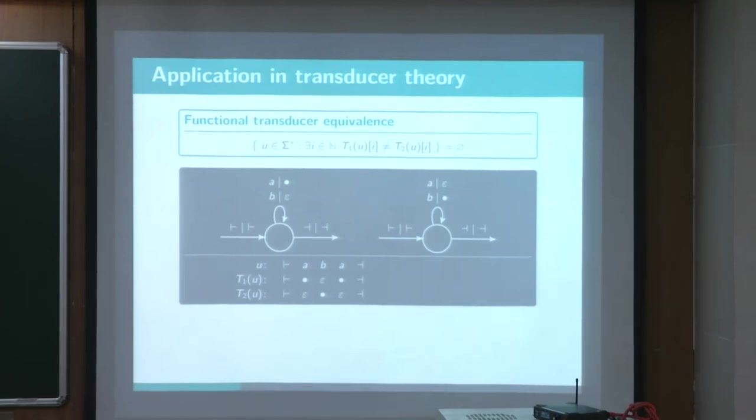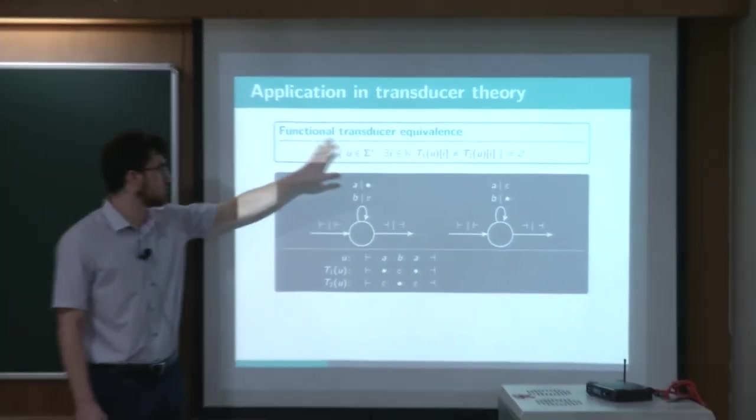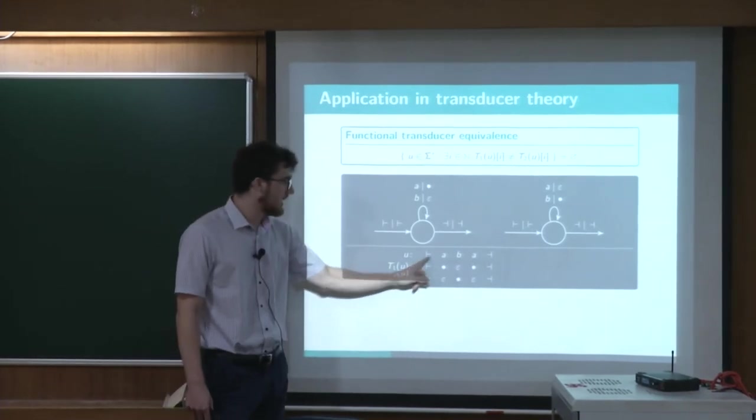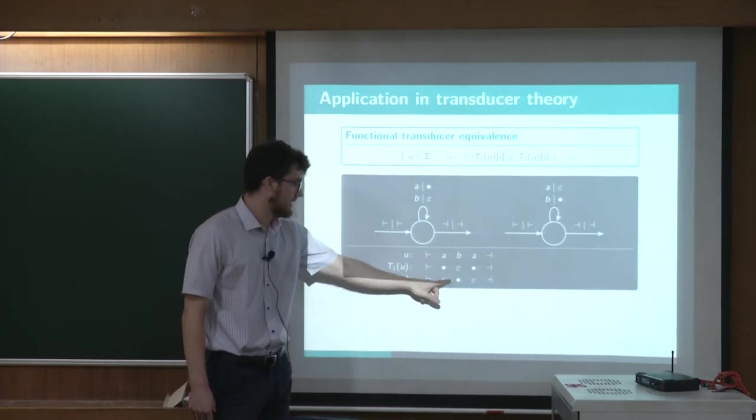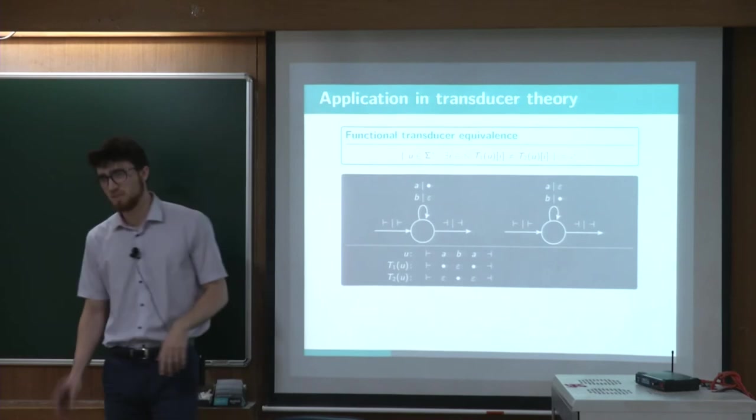So obviously those two transducer are not equivalent. And here is a counterexample. But I want to show you this in detail. So if I want to prove that this word belongs to this state, I have to find this I. So if I take I equal one, I will not get any mismatch. If I take I equal two, I have to compare those two bullets. So this is not a mismatch, indeed.